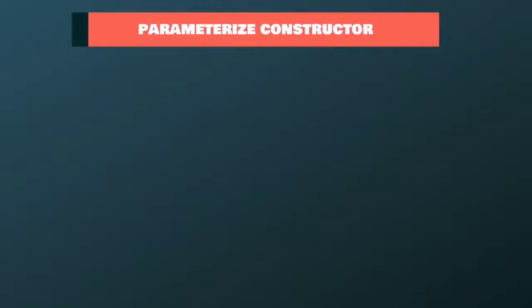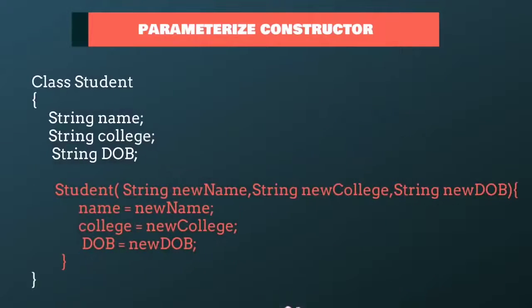Third and the last type is parameterized constructor. This type of constructor accepts a parameter and is used to initialize the variable of a class at runtime.